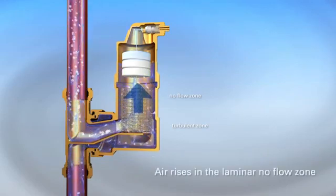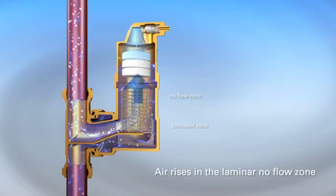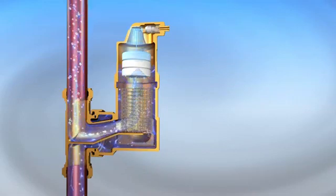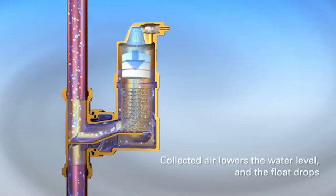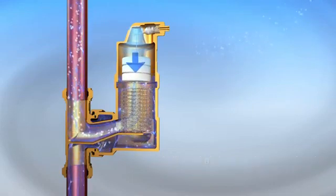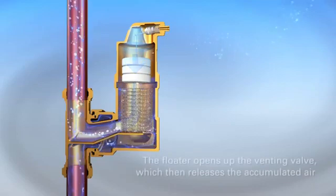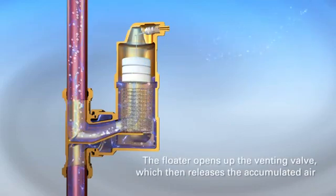Air rises in the laminar no-flow zone. The collected air at the top of the unit lowers the water level and the float drops. This lowering of the float opens up the venting valve, which in turn releases the collected air.